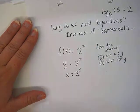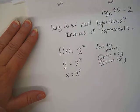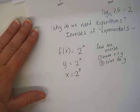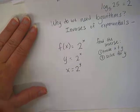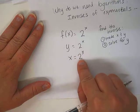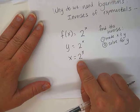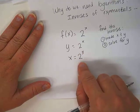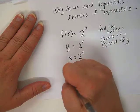So f of x means y, so let's rewrite that. So now let's trade the x and the y, and now we need to solve it for y. How do we solve for y when y is the exponent? We have to use a logarithm. So now, look at our sentence,